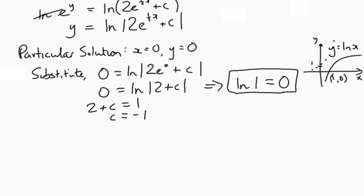So the point (1,0) is a pair: x is one, y is zero, so log of one is zero. So c is negative one, and therefore the particular solution we can just rewrite it: y equals the natural log of |2e to the half x minus 1|. There is our solution.